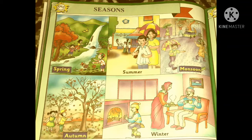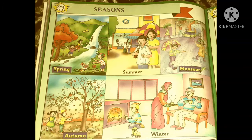In Summer season, we feel very hot. We drink cold drinks. We eat ice cream. We carry an umbrella in sunlight. We wear loose cotton clothes in Summer season.